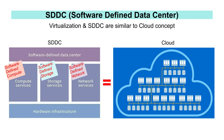SDDC is a concept called Software-Defined Data Center, which means a software-defined or virtualized data center. SDDC consists of SDC, SDS, and SDN, which stand for Software-Defined Compute, Software-Defined Storage, and Software-Defined Network, respectively. This means that the server, storage, and network are virtualized, and the overall data center is also virtualized and software-defined. This is a cloud-like concept — not as individual elements, but as a pool of resources combining all of them, allowing users to use resources as needed.